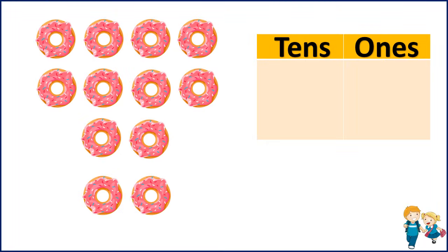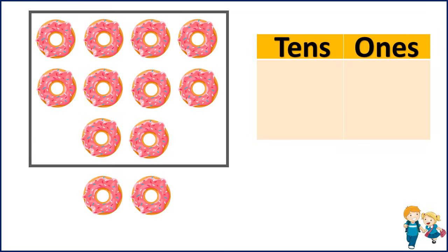Now let's take the next set of objects. Here we have some donuts. Now let's count the donuts and group them as 10: 1, 2, 3, 4, 5, 6, 7, 8, 9, 10. So this is 1 ten.